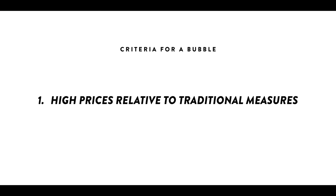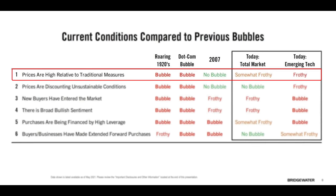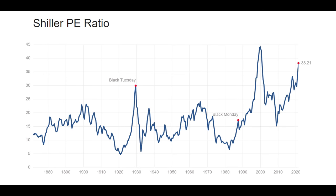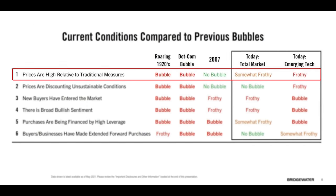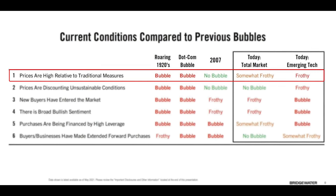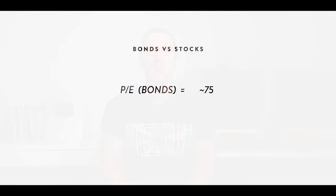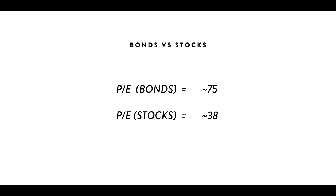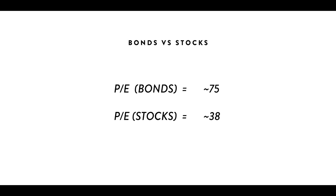Ray classifies the market as somewhat frothy on this point, and I find this interesting because I would call this one a bubble. The Schiller PE for the S&P 500 currently sits at 38, which is almost the highest it's ever been — certainly higher than 1929 and 2008, just not quite as high as the tech bubble. The reason Ray says somewhat frothy rather than full-on bubble is because he compares stock valuations to bond valuations. If you invested in bonds right now you're roughly accepting a 75 times price-to-earnings ratio, so stocks at a PE of 38 still seem like a better place to park your money.